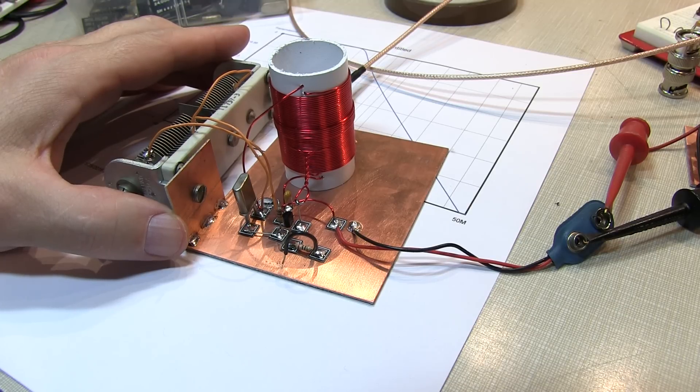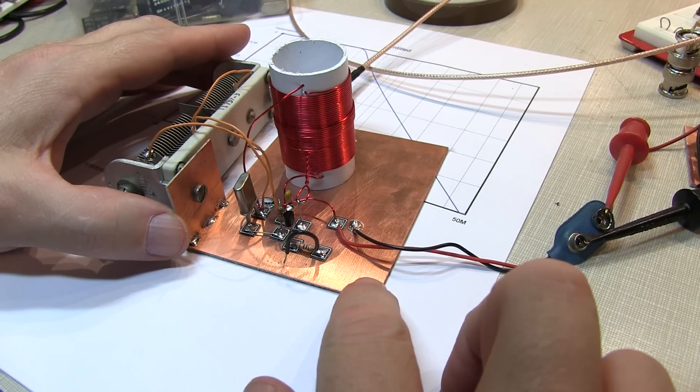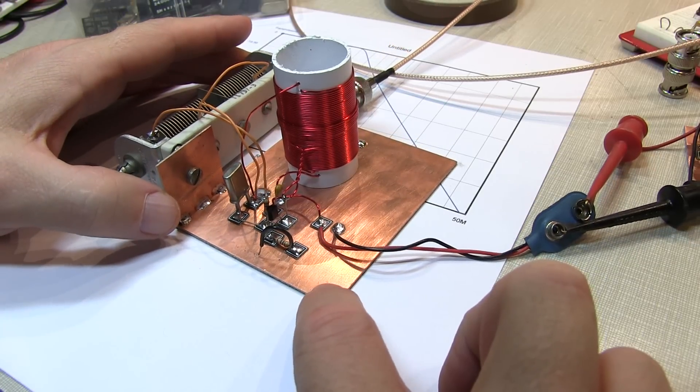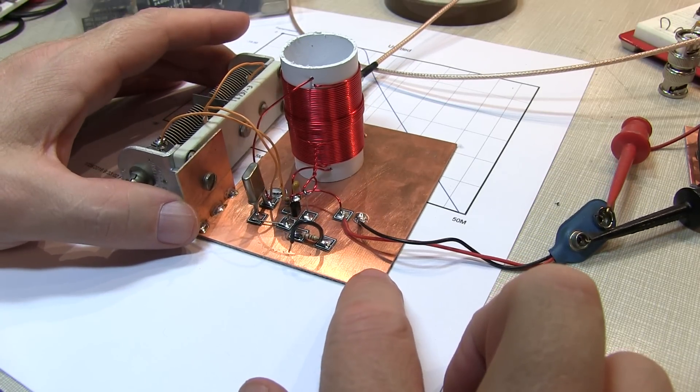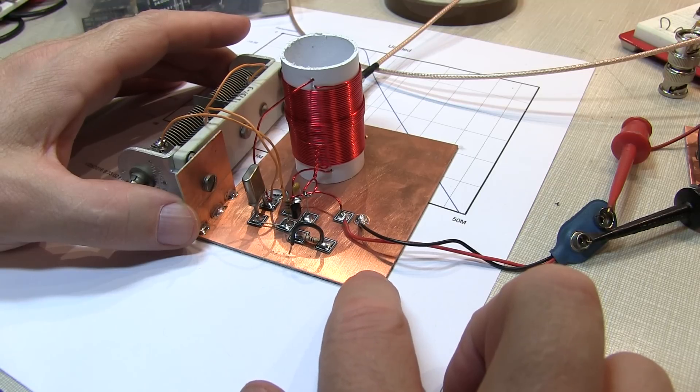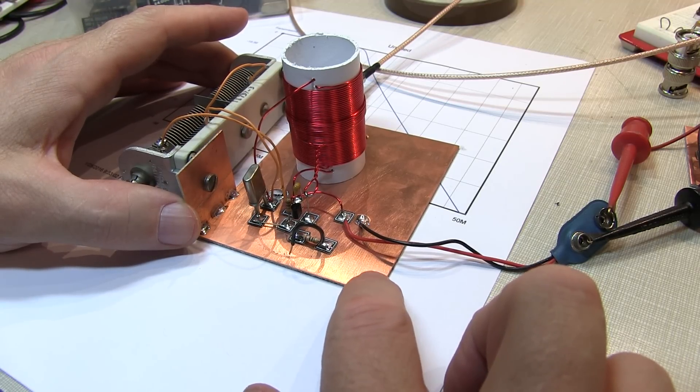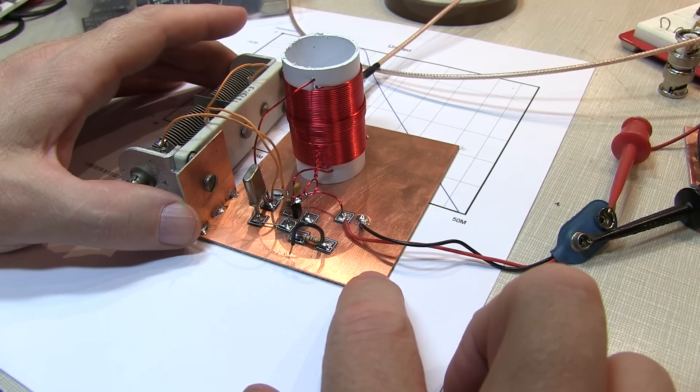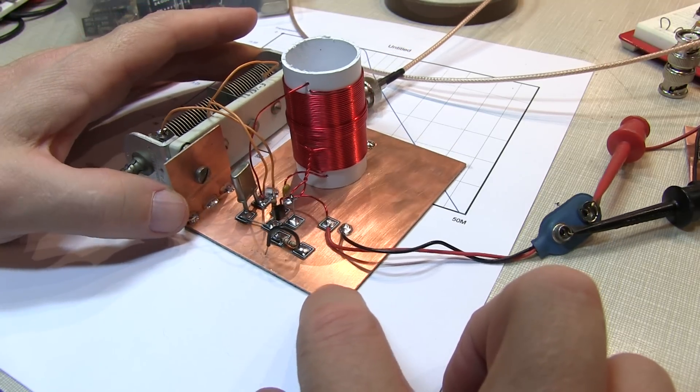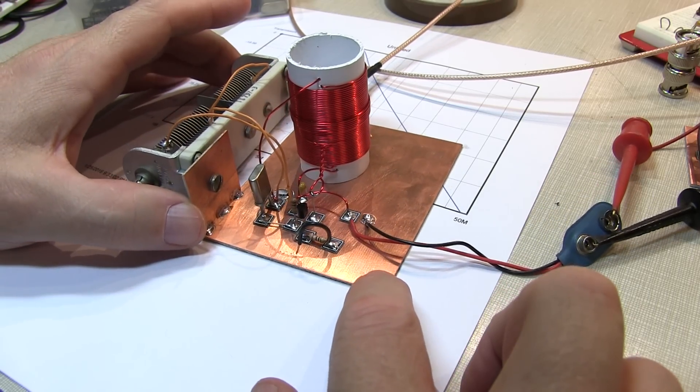The ugly truth is that the output of this little Michigan Mighty Might is full of harmonic distortion, which means that it's not only sending out signals at 3.579 MHz, but also 2 times that, and 3 times that, and 4 times that, and so on. So it's a very dirty little transmitter. So let's go take a look at what I mean by that.